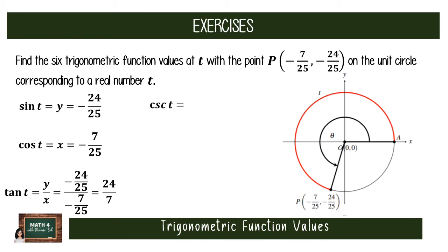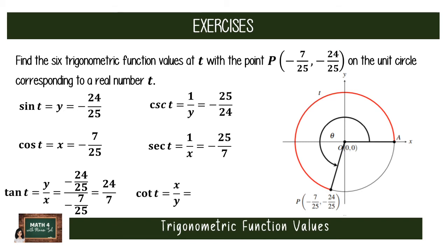Next, cosecant of t equals 1 over y, which is −25/24. Secant of t equals 1 over x, which is −25/7. And lastly, cotangent of t equals x over y — that is (−7/25) ÷ (−24/25), which simplifies to 7/24.